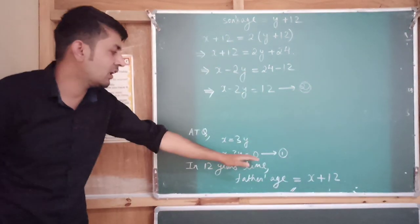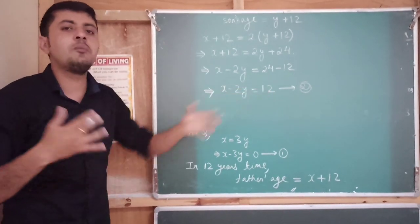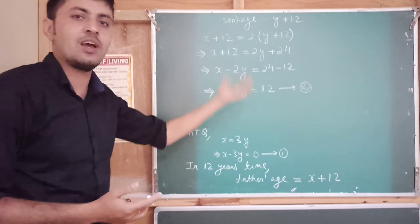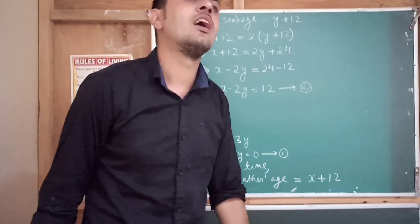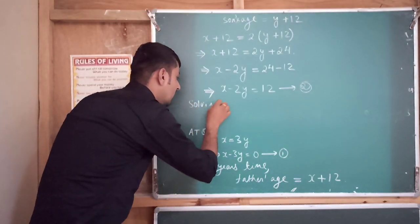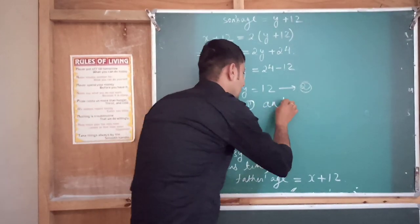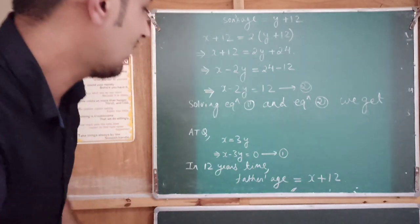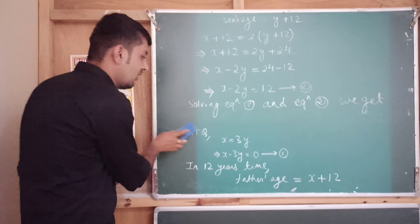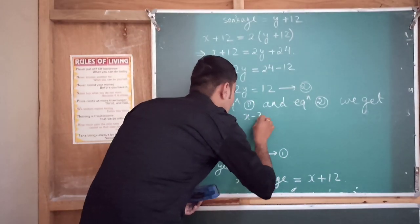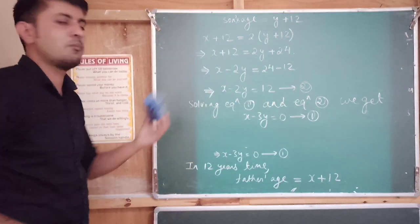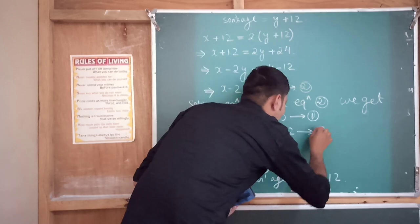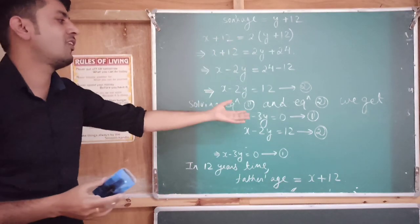So we have formed equation number 1 and equation number 2. Now we will solve equation 1 and equation 2 using the elimination method to find the value of x and y. Equation number 1 is x minus 3y equals 0, and equation number 2 is x minus 2y equals 12.